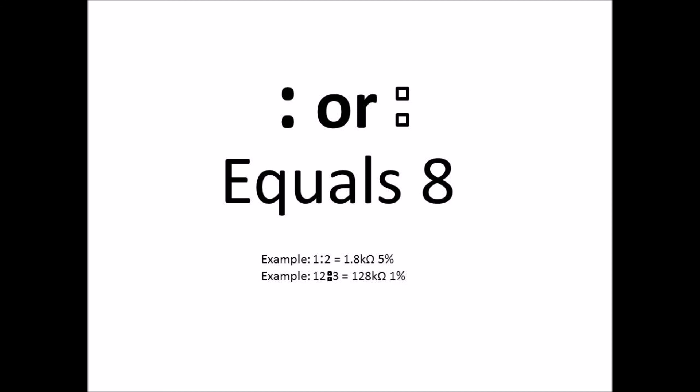And then I'll show another example there: 1, 2, and then the two squares on top of each other, and then 3. So it would be 128 kilohms, so it would be 128 with three zeros after it.